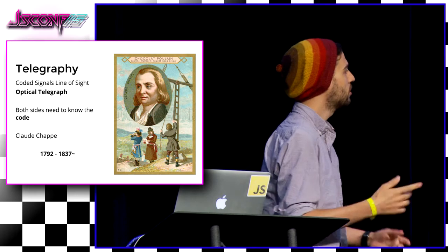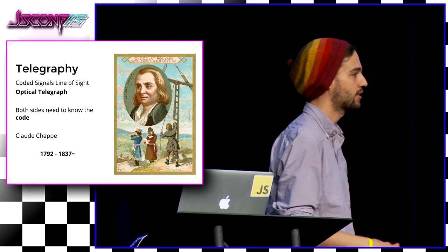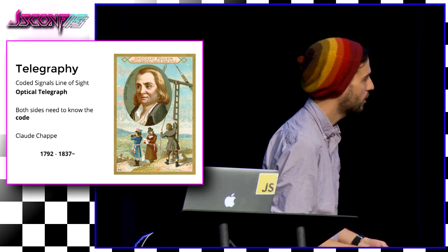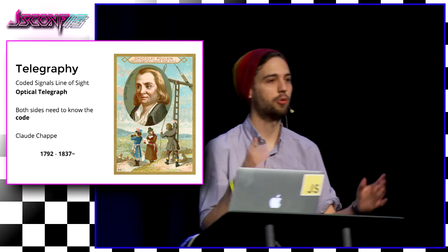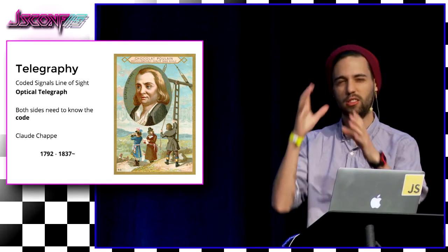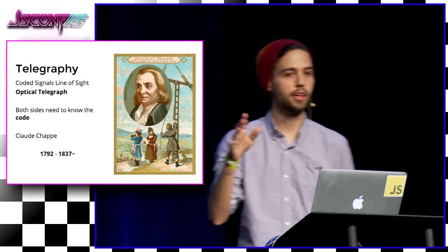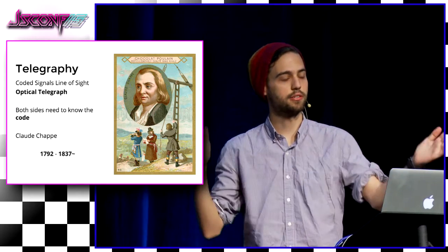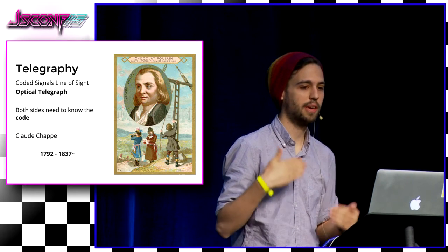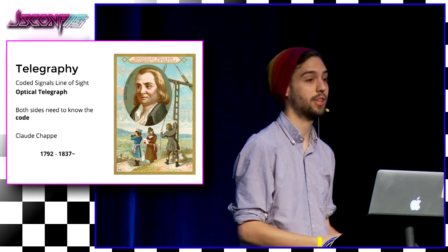Their neighbors were getting kind of mad because it was loud, so they needed a better way. They said, I have this telescope — how about I look at you, and you could make some symbols, and I could understand it. Communication over a great distance. So this idea evolved and they came up with the idea of an optical telegraph.